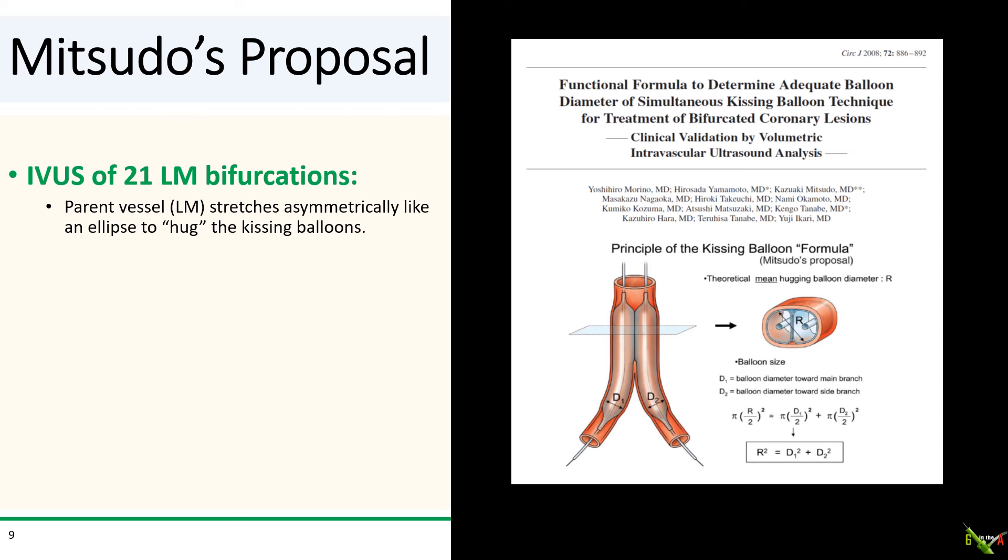If mental arithmetic is not your forte, then Mitsudo's proposal published in 2008 is even easier. These Japanese researchers did IVUS of the left main in 21 bifurcations and noted that the parent vessel, in this case the left main, generally stretches asymmetrically, like an ellipse, to hug the kissing balloons. They used this to establish that the square of the parent vessel diameter is actually approximately the sum of the squares of the diameters of the side branch and the main branch. Kind of like Murray's law, but using squares instead of cubes.